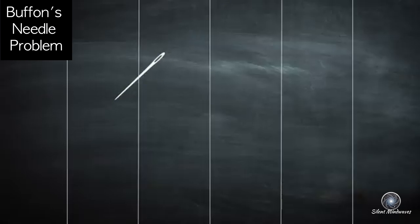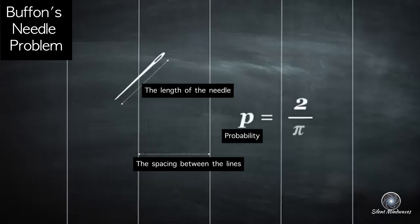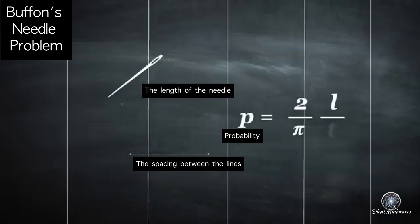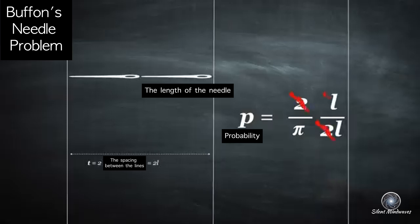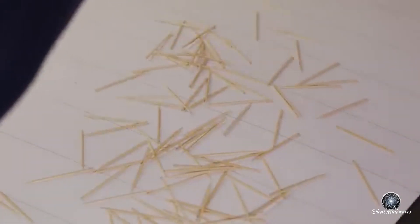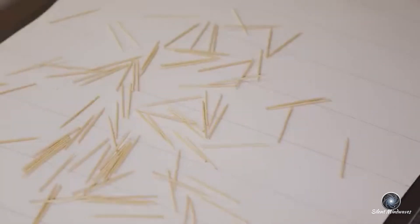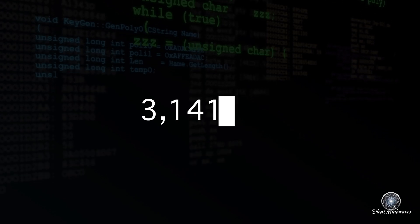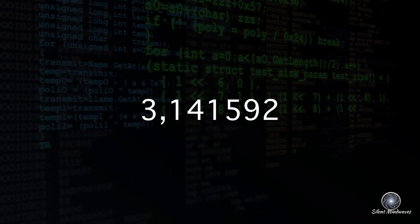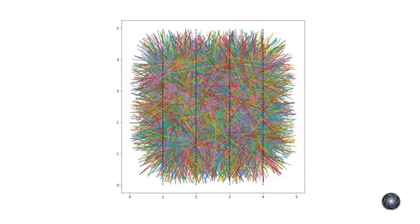If we adjust the spacing between the lines to be exactly twice the length of the needle, the calculations directly reveal pi. In 1901, Mario Lazzarini conducted this experiment 3,408 times and was able to calculate the first six digits of pi. Today, with computers, we no longer need needles to approximate pi, but it's still a fascinating way to see how pi emerges from randomness.